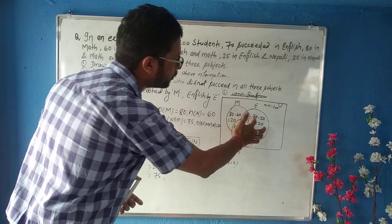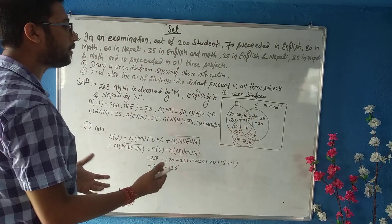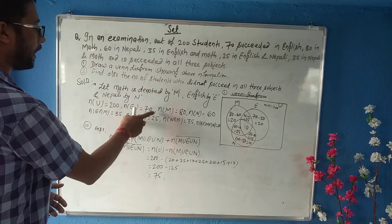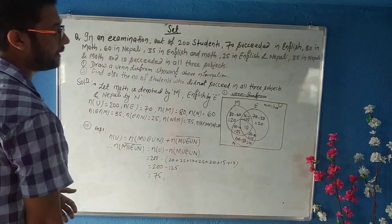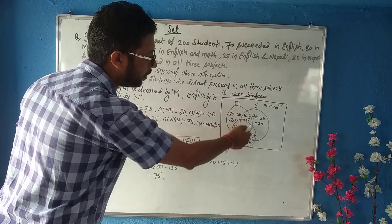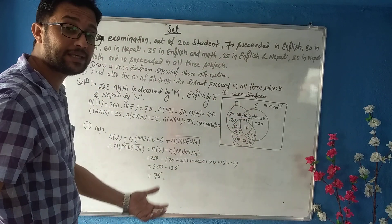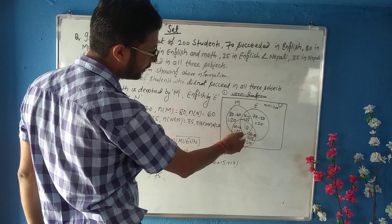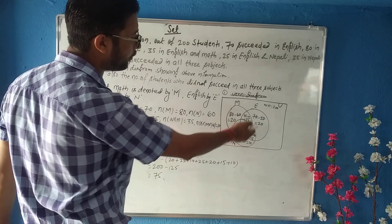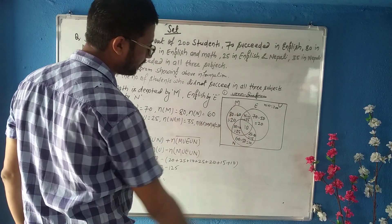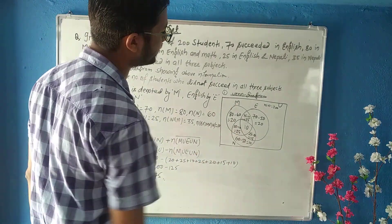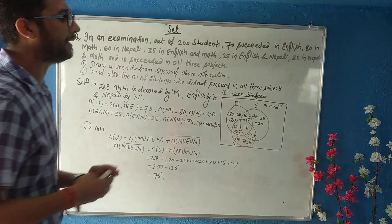We subtract 70 minus 50 to get the English-only region. For M: 80 minus the remaining which already exists — 25 plus 25 is 50, plus 10 is 60. So 80 minus 60 equals 20. Similarly we calculate the value of Nepali only. This completes our representation of the Venn diagram.